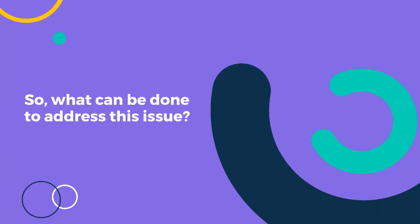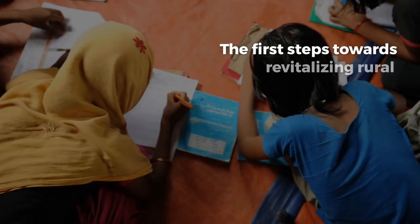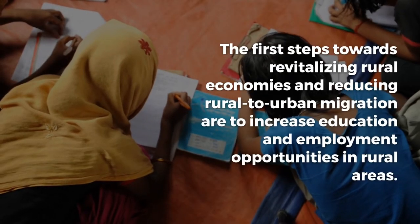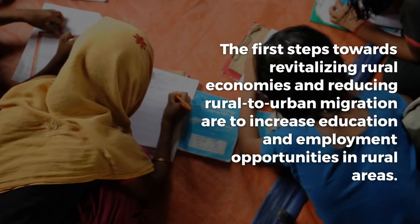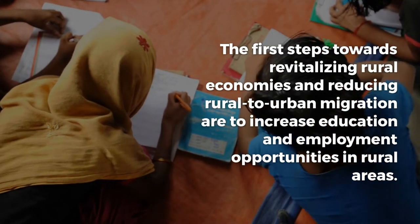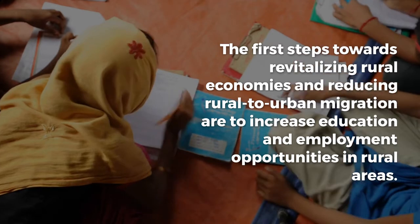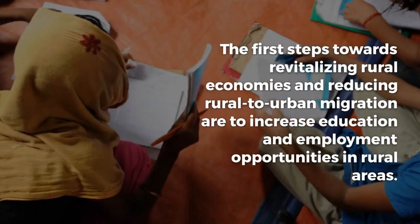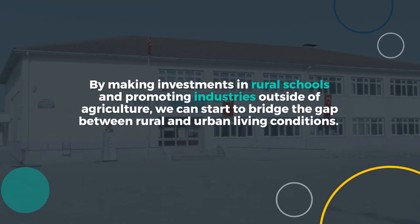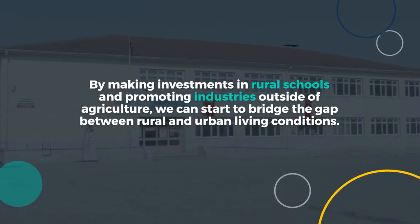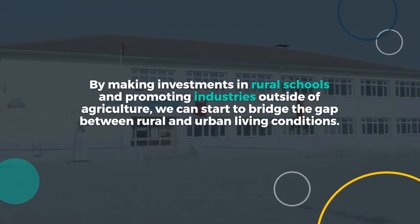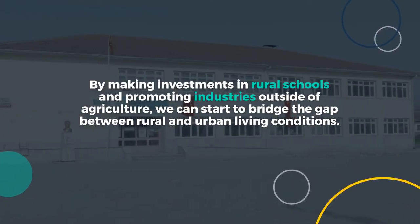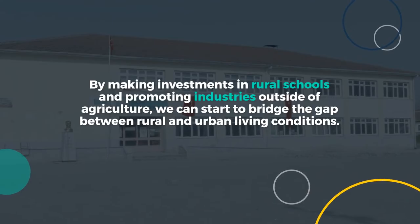So, what can be done to address this issue? The first steps towards revitalizing rural economies and reducing rural to urban migration are to increase education and employment opportunities in rural areas. By making investments in rural schools and promoting industries outside of agriculture, we can start to bridge the gap between rural and urban living conditions.